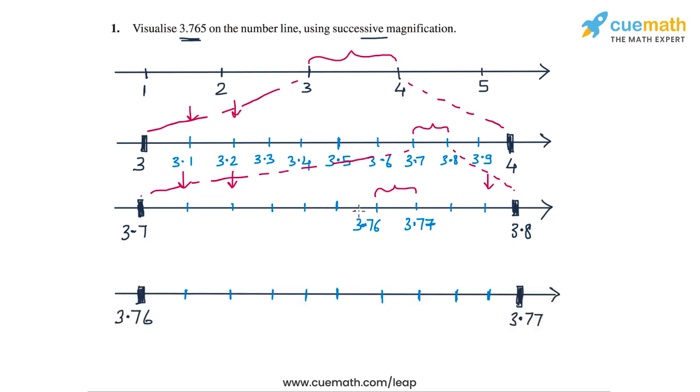So now I have magnified the interval from 3.76 to 3.77. In this magnified number line, you can see the interval from 3.76 to 3.77 divided into 10 parts and we can see the markers for 3.761, 3.762, all the way up to 3.769.